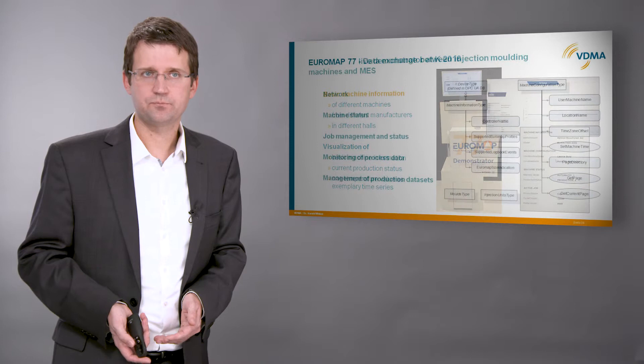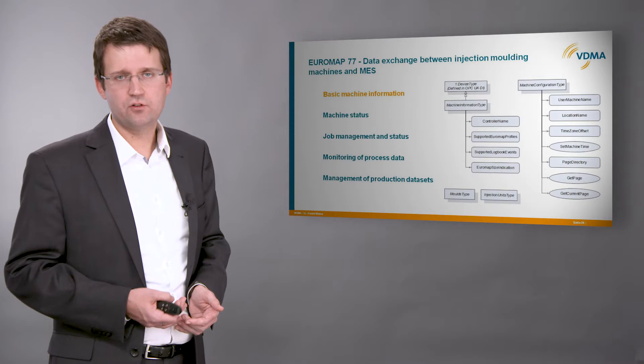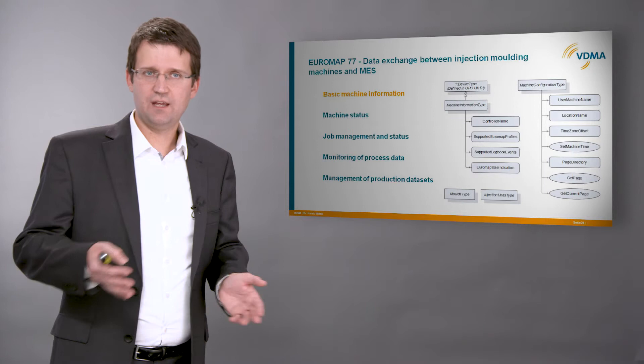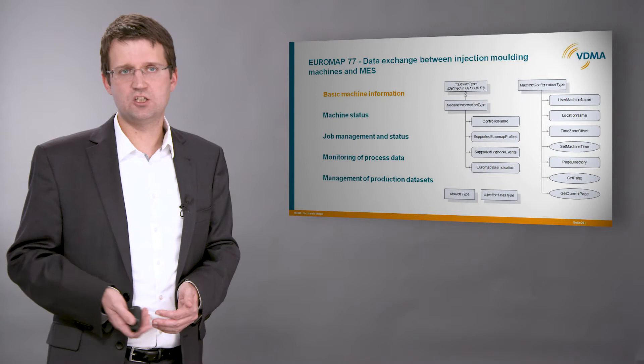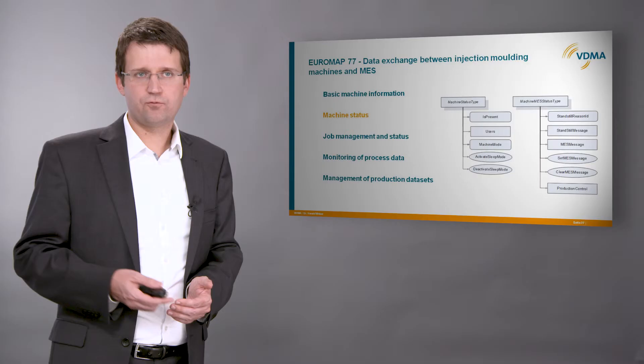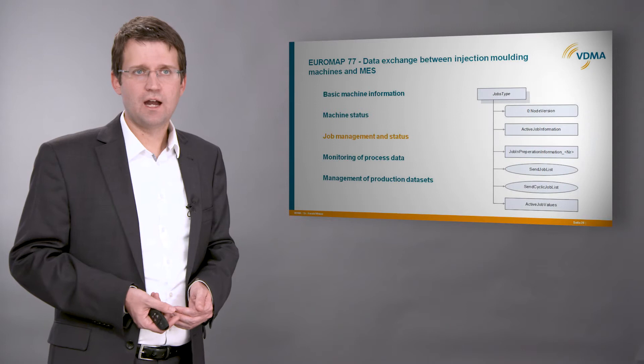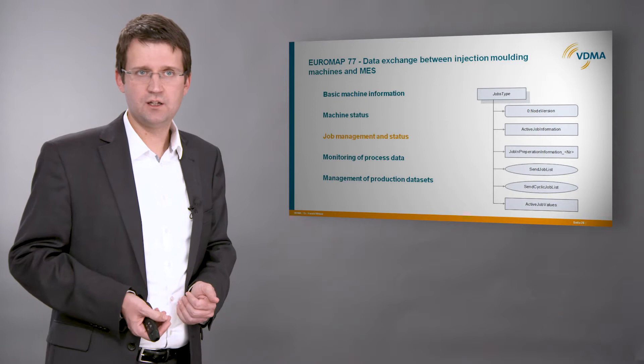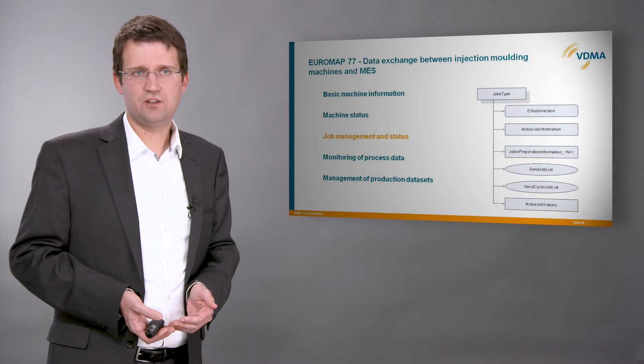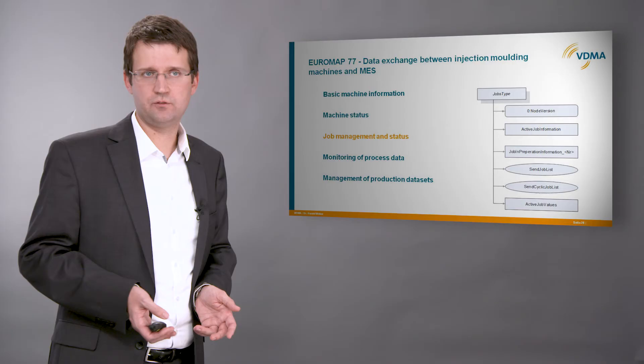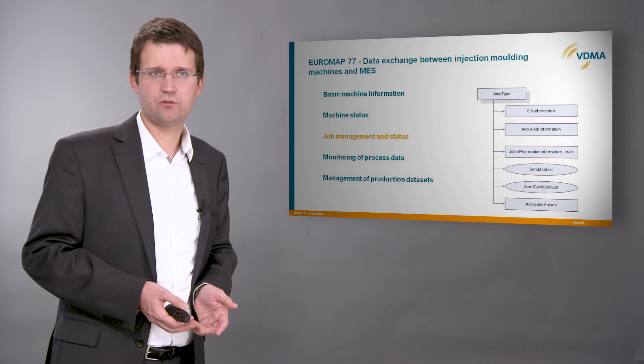What is the functionality included in Euromap 77? First, we have some basic information about the injection molding machines — for example, the name of the manufacturer, the model, but also the current configuration, like which molds and injection units are installed. The next information block is the current status of the machine: is the machine in manual mode or automatic mode, which operators are currently logged in, what is the reason for a current standstill. After this more or less static information, there is a block for the complete management of jobs. A job may be, for example, to produce 10,000 mobile phone cases. Euromap 77 includes basic information on the current and possible following jobs — name, description of the part, used molds and material — as well as a job status: if the machine is in startup phase or already producing parts, how many good and how many bad parts have been produced.